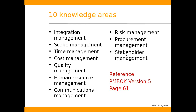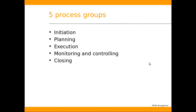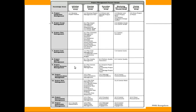So there are 47 processes grouped into 10 knowledge areas, and these 47 processes are again grouped into 5 process groups: Initiation, Planning, Execution, Monitoring and Controlling, and Closing.